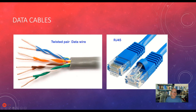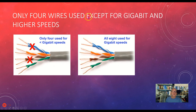Twisted pair data wire looks like this. I've got four pairs of wires — eight different wires. They come in blue and blue stripe, orange and orange stripe, brown and brown stripe, green and green stripe. Here's an RJ45 cable, which is the one you plug into your computer or into the wall typically. Only four of those wires are used, except for gigabit speeds. So at typical speeds, only four of these wires are used — the green and the orange. The blue and the brown are not used typically. However, for gigabit speed networking, you do use all eight of them.